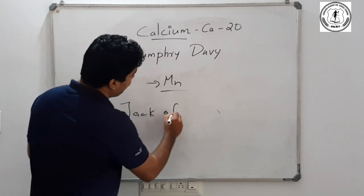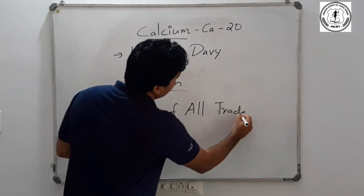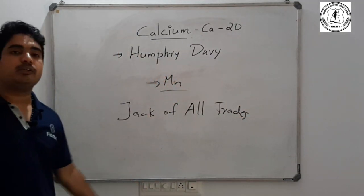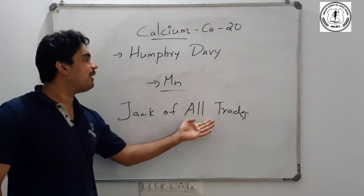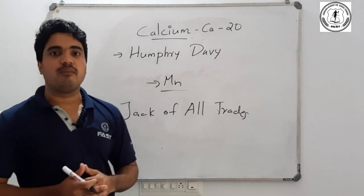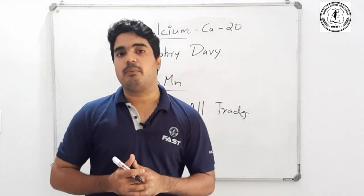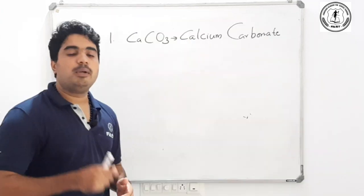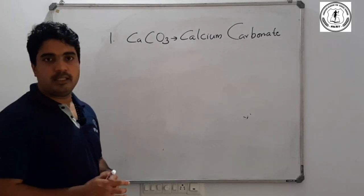It is called the Jack of All Trades — it is also called magnesium. Now let's look at some of the compounds of calcium. I think we have a calcium compound called calcium carbonate.